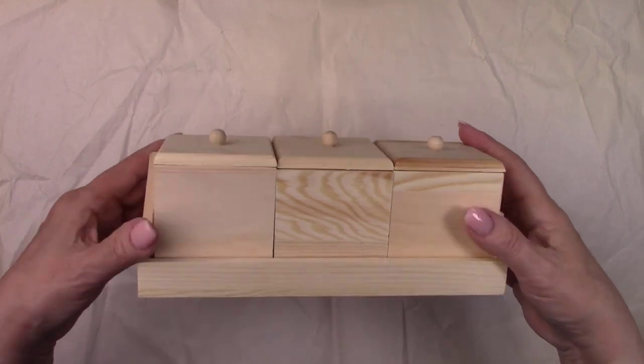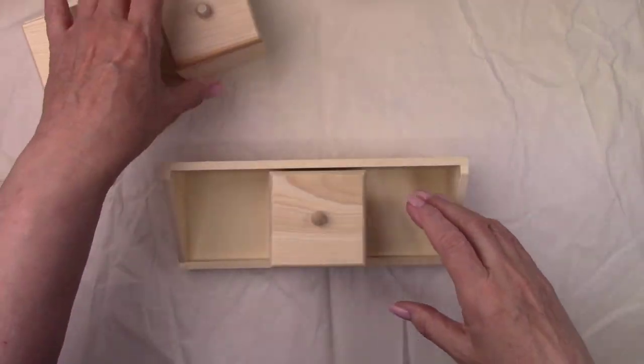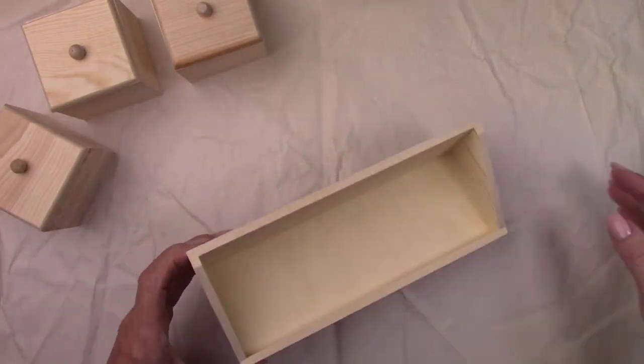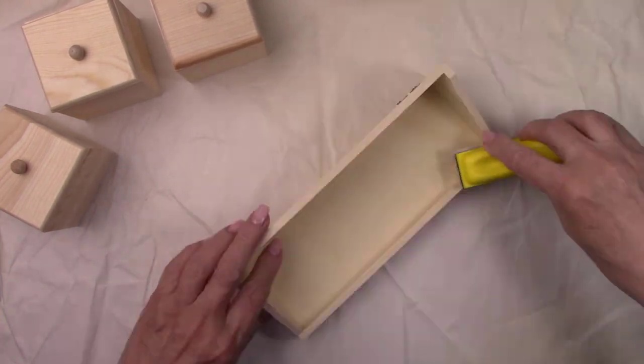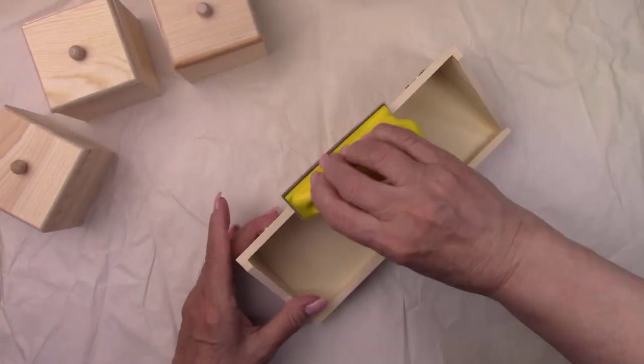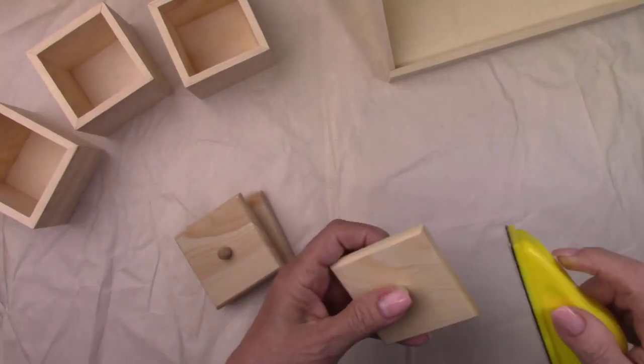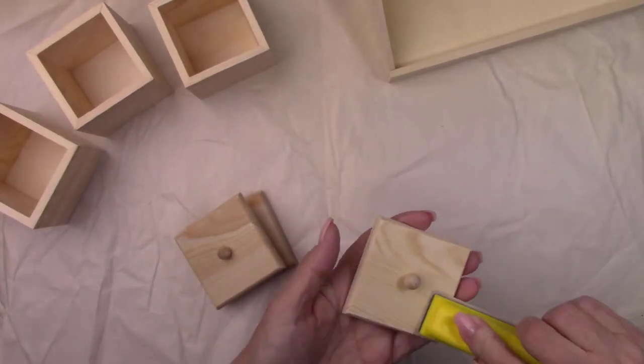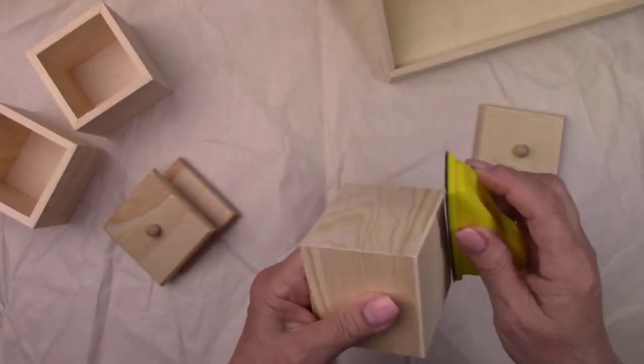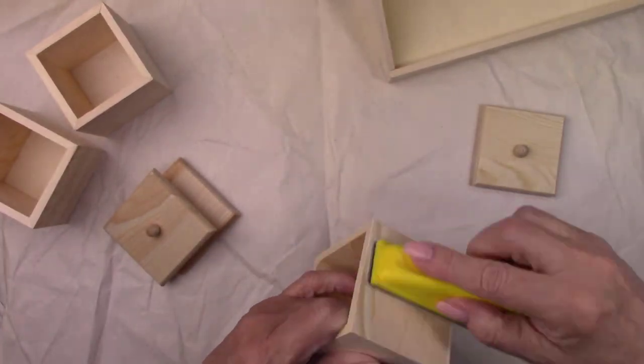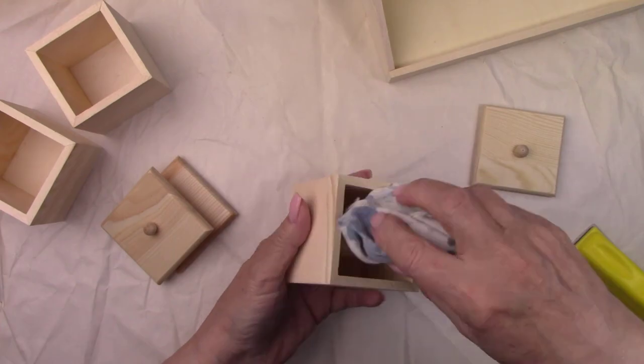I got this cute salt and spice box set at Hobby Lobby. I'm going to give it a quick sanding to smooth out any rough edges. I got this little hand sander on Amazon. It works really well. I'll leave you a link in my description box in my favorite tool section just in case you want to check it out.